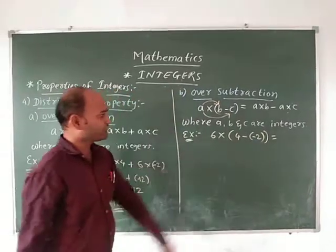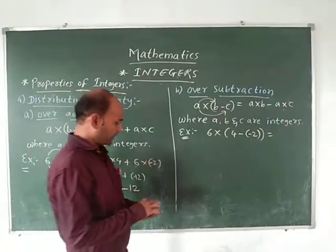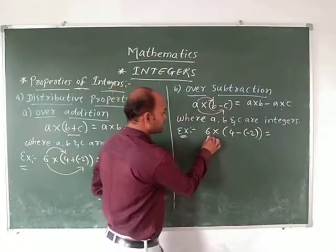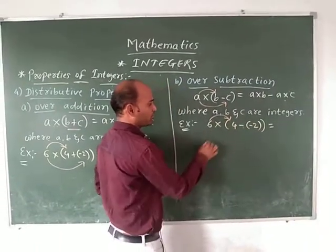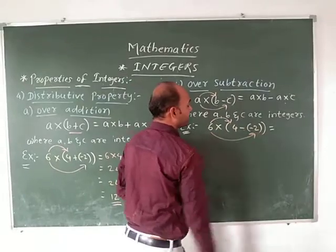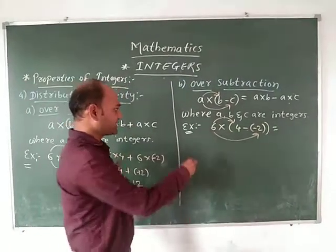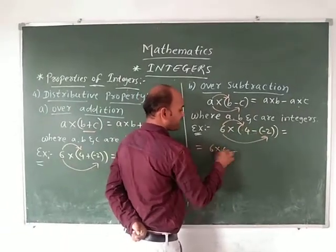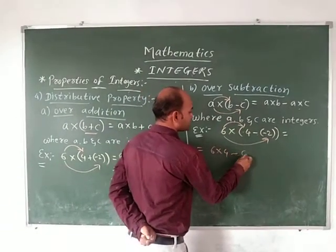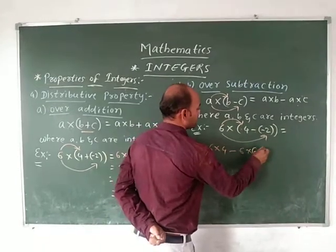So with this example, we can solve it again. Let us see here, 6 multiplied by 4 first, subtraction sign we can put. And then 6 multiplied by minus 2 is there. 6 into 4, minus sign is there, minus sign as it is, then again 6 into minus 2 is there.